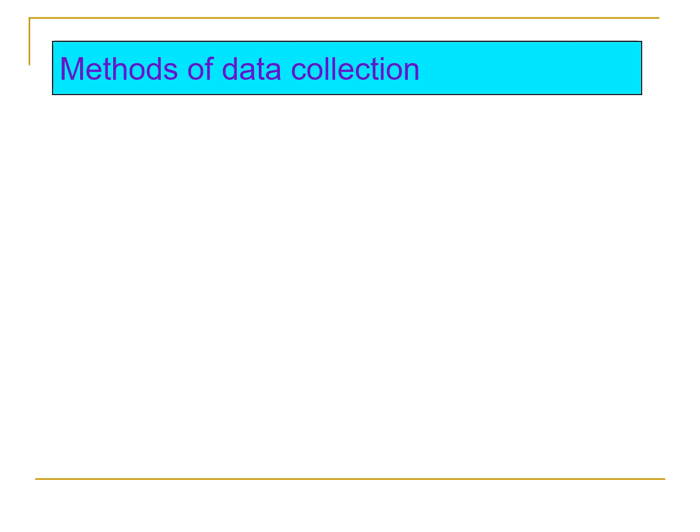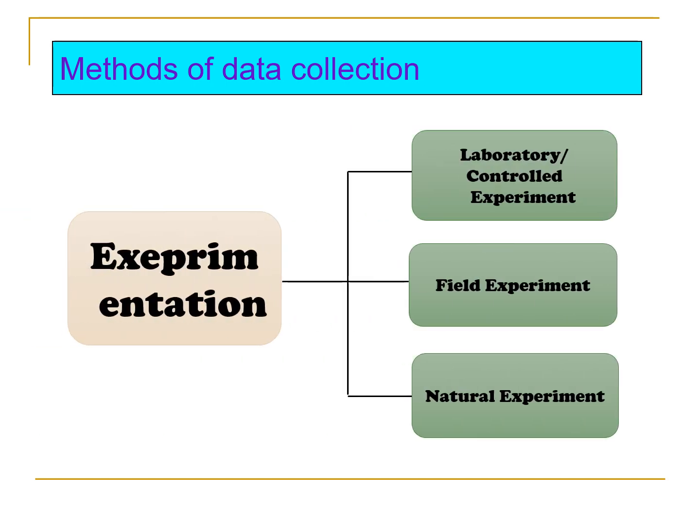The fifth method of data collection is the experimentation. Experimental method involves the manipulation of variables to establish cause-and-effect relationship. There are three types of experimentation. The first is the laboratory or controlled experiment. It is an experiment conducted in a well-controlled environment. A controlled experiment is a scientific test that is directly manipulated by a researcher to test a single variable at a time.